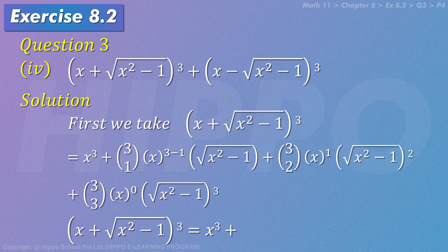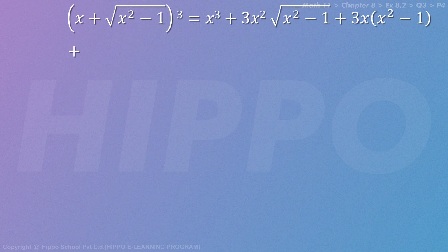x power 3 minus 2, so x² √(x² - 1) plus ³C₂, which is 3, x (√(x² - 1))² plus, and I will write it without the x⁰ term.